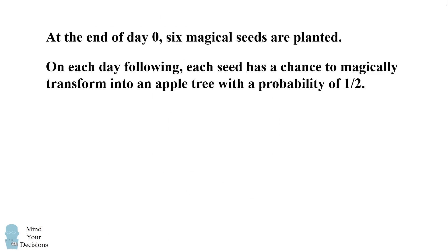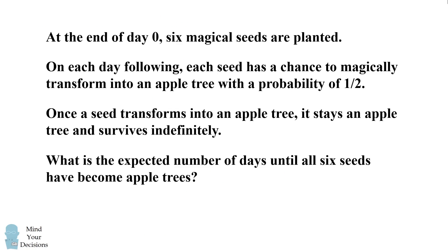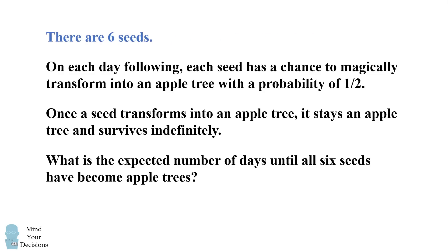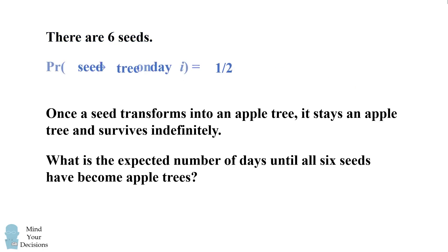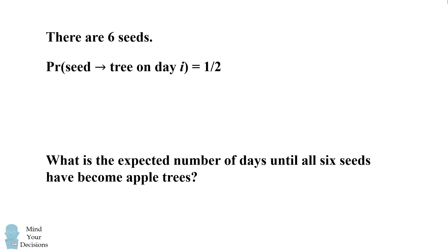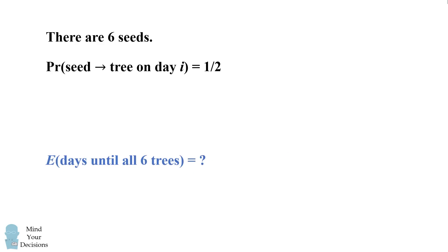Let's get started by translating the problem into mathematical details. There are six seeds to consider. The transition probability is that each seed turns into a tree on day i with probability one-half. Once a seed is a tree, it stays a tree forever — we'll keep that in account as we do the calculation. We need to find the expected number of days until all six seeds are trees.